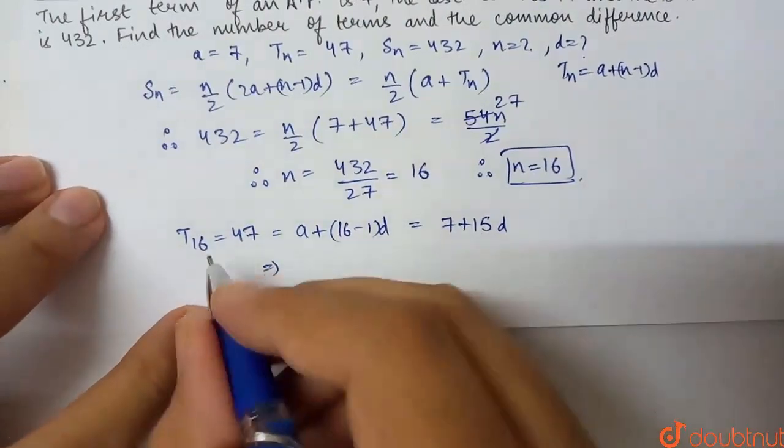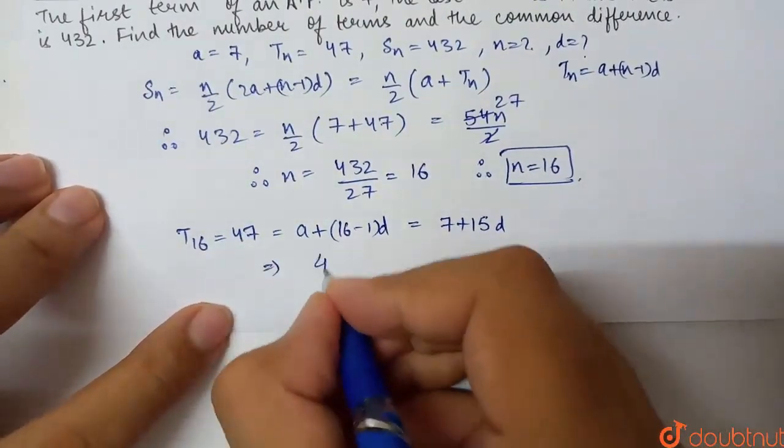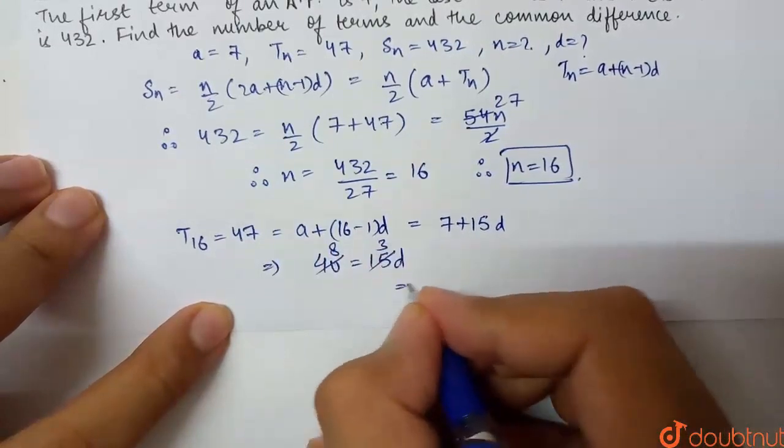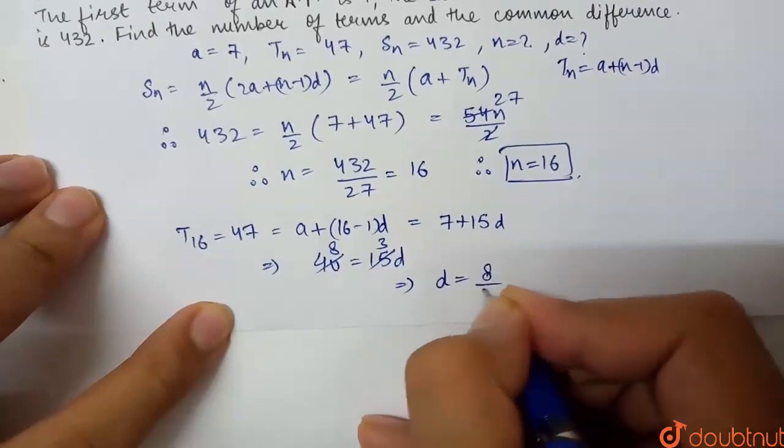If I rearrange this, then 47 minus 7, which is 40, equals 15D. If we cancel, it's 8 by 3. So D comes from 8 by 3.